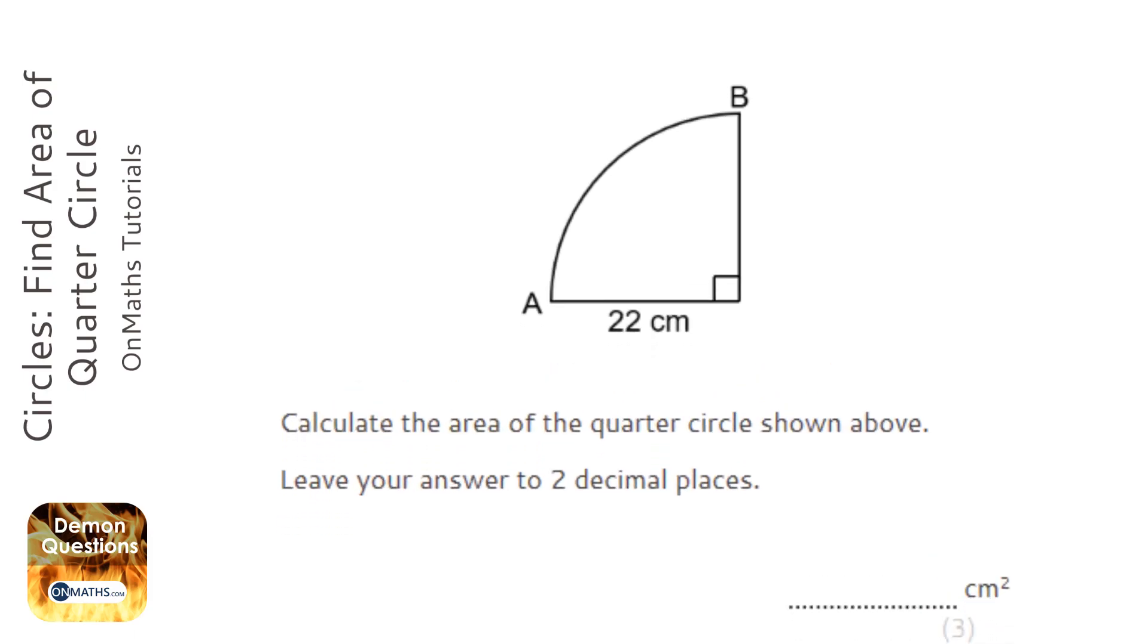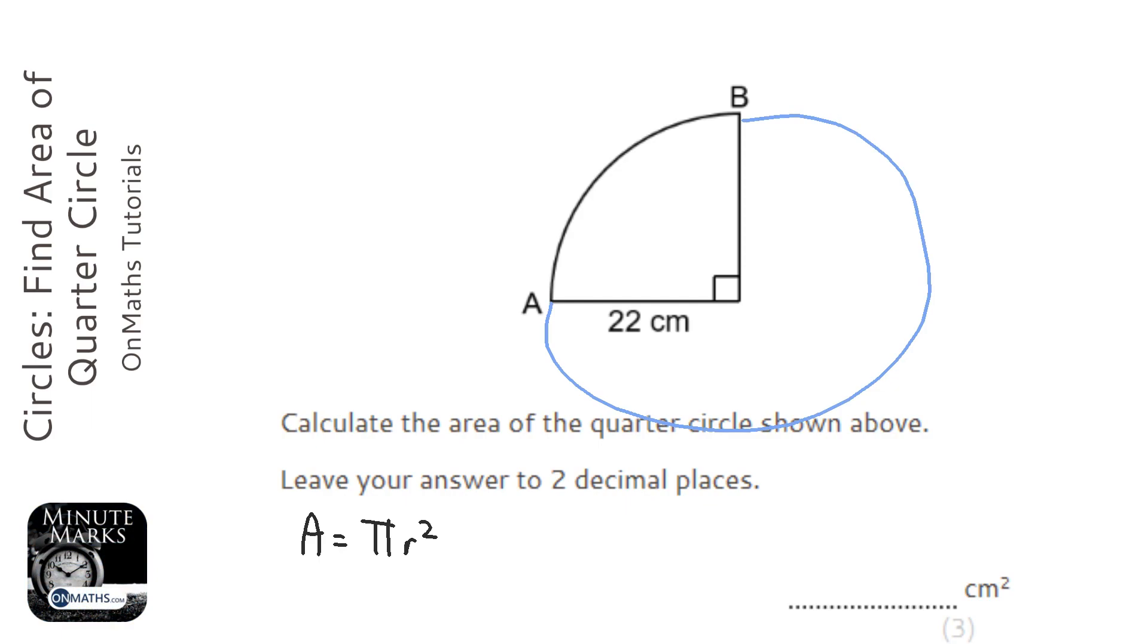So for this question we just need to remember the area of a circle. Now the area of a circle is going to be pi r squared. Now that's the area for a full circle, but we only have a quarter of it.